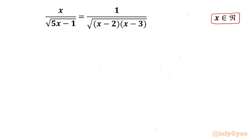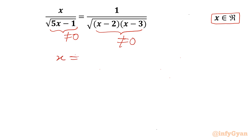Let's get started by writing that the denominator cannot be 0. This cannot be 0, and this also cannot be 0. So I can write x cannot be equal to 1/5, 2, and 3.